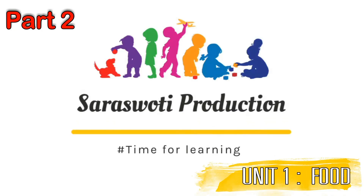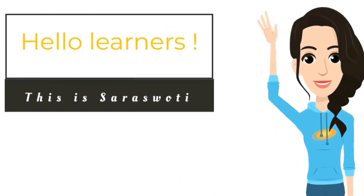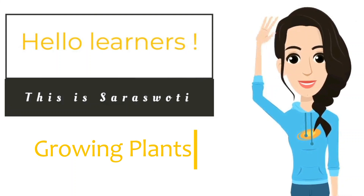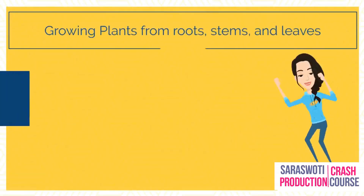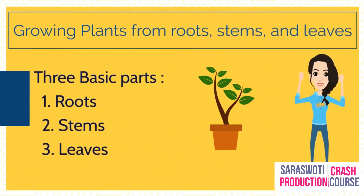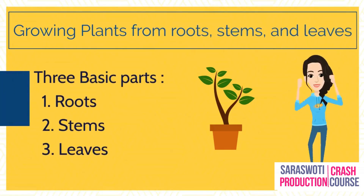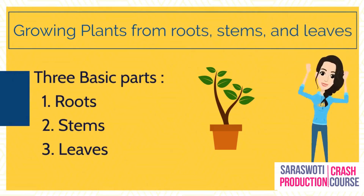Unit one: Food. Hello learners, today we're going to study about growing plants. Chapter number one: Growing Plants from Roots, Stems and Leaves. Plants are amazing — they can grow not only from seeds, but also with the help of roots, stems and leaves.